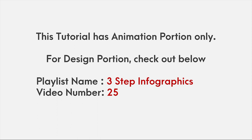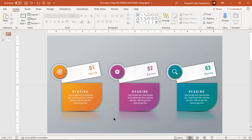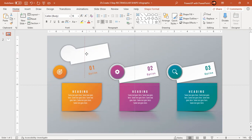This video has the animation portion only. For the design portion, please check out the 3-step infographics playlist and video number 25. Let's first move apart each element of any one design segment and check how many elements need to be animated. It's always good to do this pre-task.